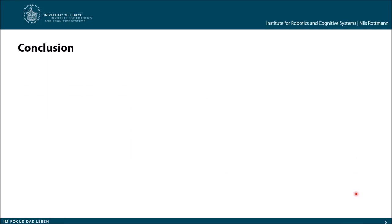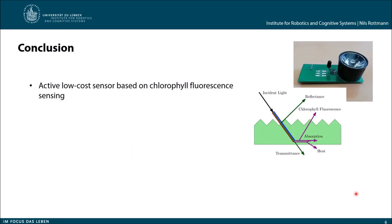Let's come to the conclusion. We designed an active low-cost sensor which is based on chlorophyll fluorescence. You can see our prototype here on the right side again. We have an LED and a phototransistor. The idea is to send light with the LED onto the lawn and measure the chlorophyll fluorescence response.